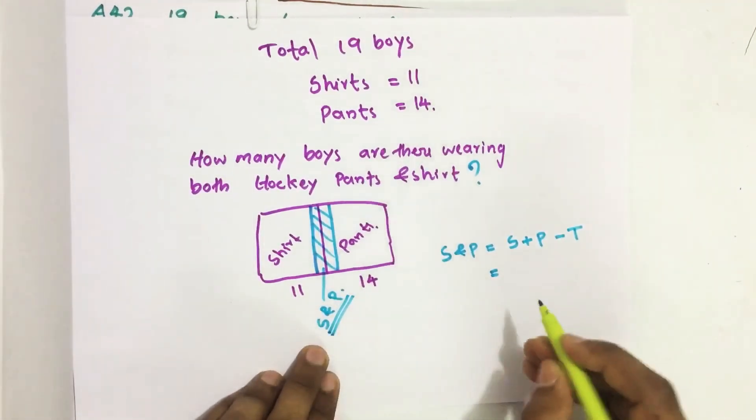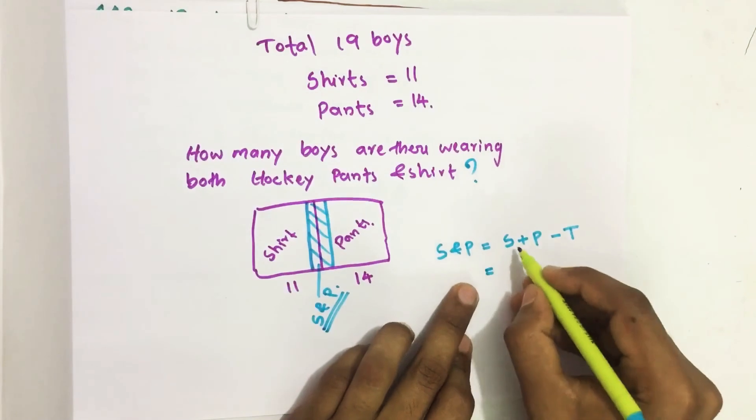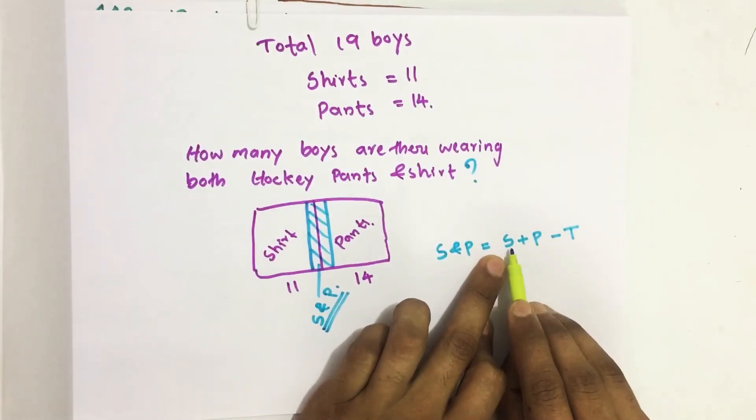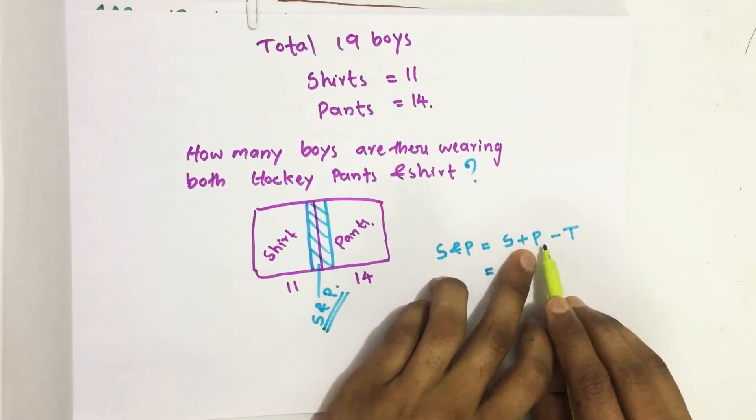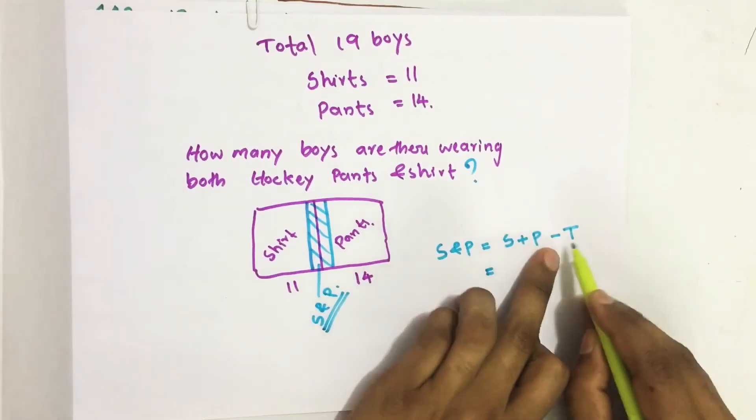Now we have to find this S and P. How we find S and P equal to boys with shirt, hockey shirt, boys with hockey pants minus total boys.